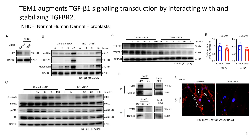So Thiamin knockout can reduce Thiamin-mediated alpha-SMA, Caldesmon-1A1, as well as fibronectin protein expression in normal human dermal fibroblasts. And Thiamin knockout can also diminish the phosphorylation of SMAD2 and ERK induced by Thiamin.